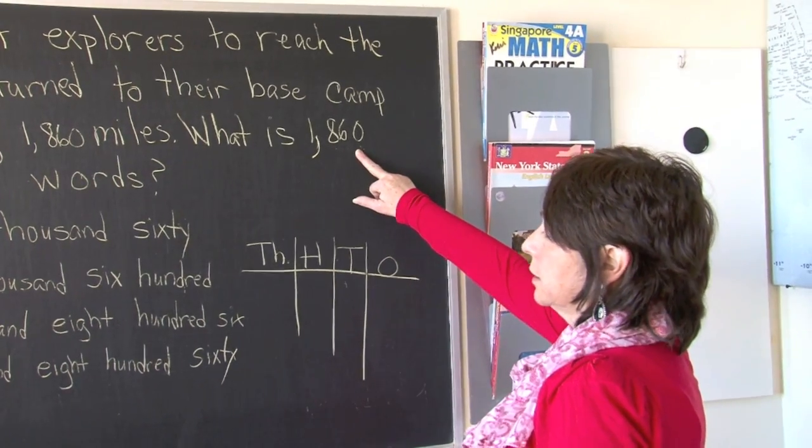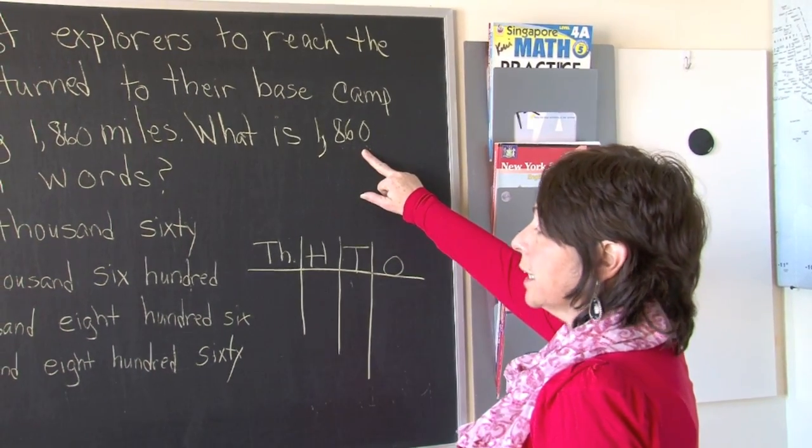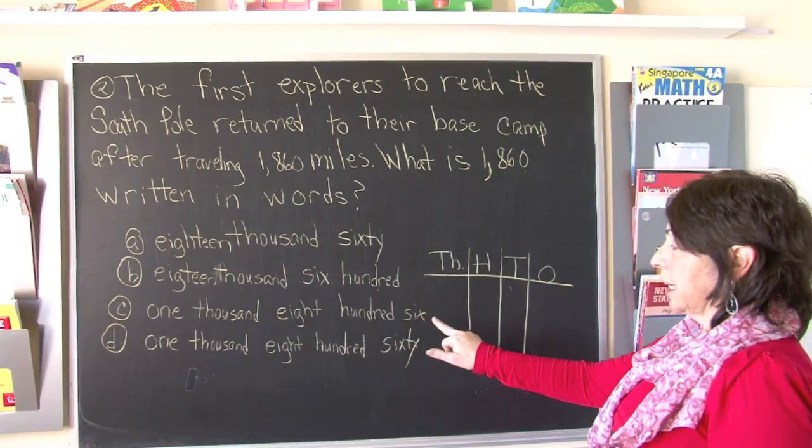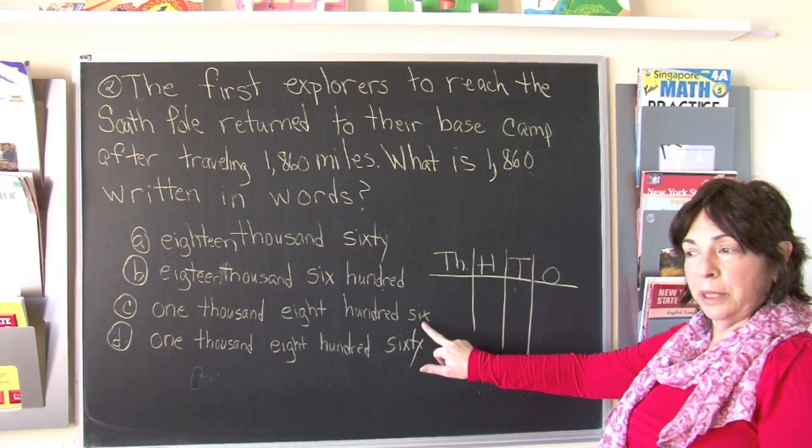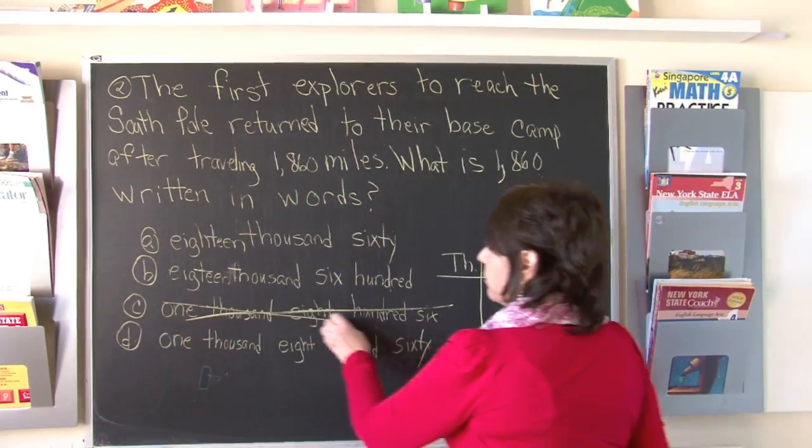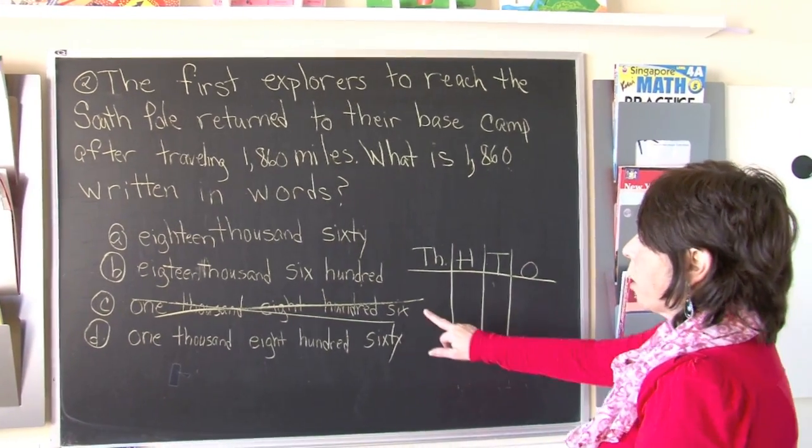So can it be C, 1,806? No, because this would mean 6 ones. So C is out of the question because there are no ones.